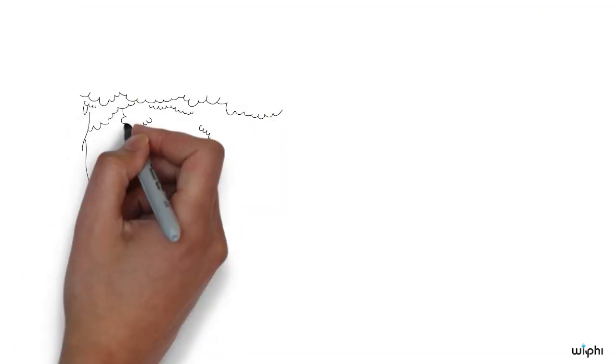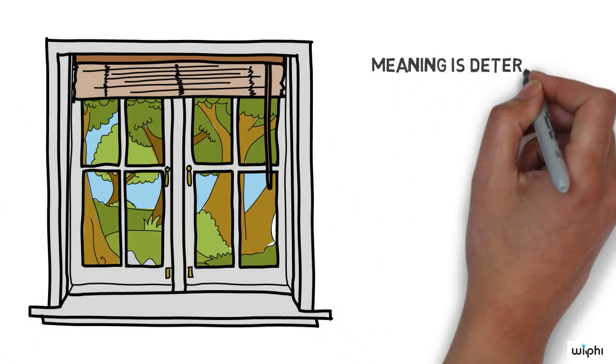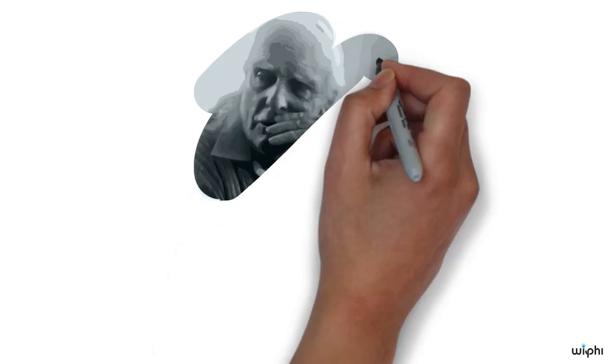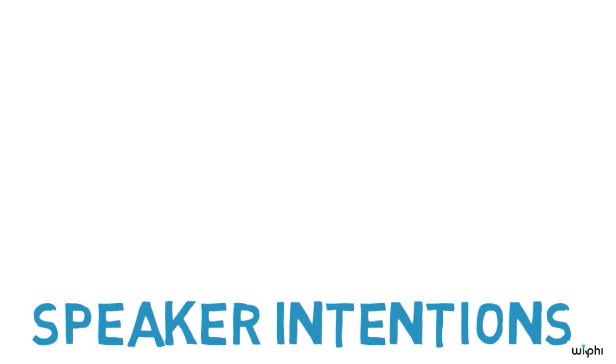Externalists, on the other hand, argue that something outside of the individual is required to determine meaning. They usually appeal to natural features of the world or the expertise of others in society. Let's look at the internalist view. The internalist view was argued for by the philosopher Paul Grice. Grice argued that speaker intentions determine meaning.